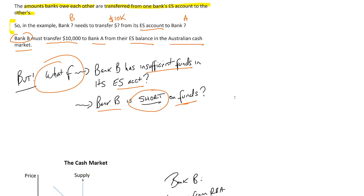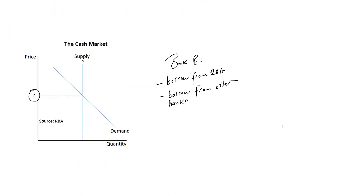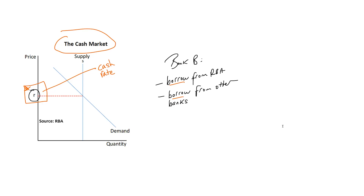The important thing to know is that this borrowing takes place at the cash rate, because they are borrowing in the Australian cash market and the price of borrowing is the cash rate. If the cash rate is higher, it is more expensive for banks to borrow funds in the Australian cash market, so their production costs will rise. If the cash rate is lower, it is less expensive for banks to borrow funds in the Australian cash market, so their production costs will fall.